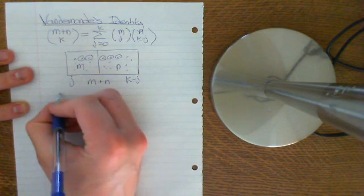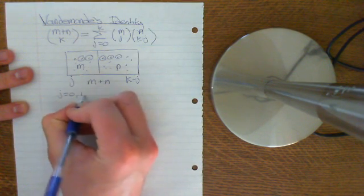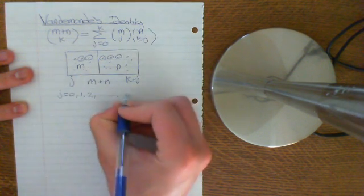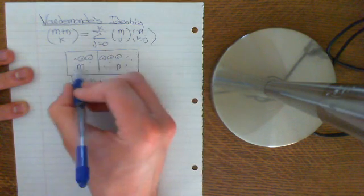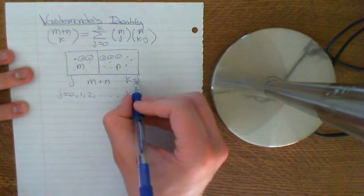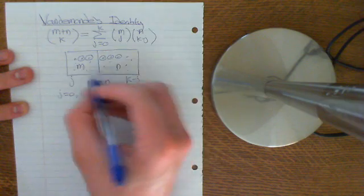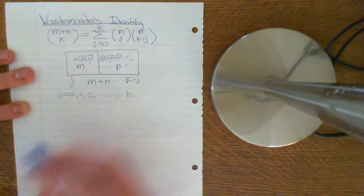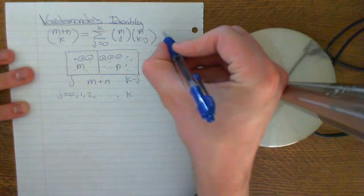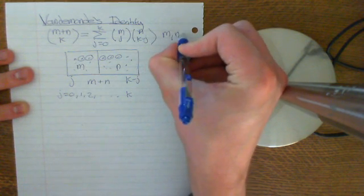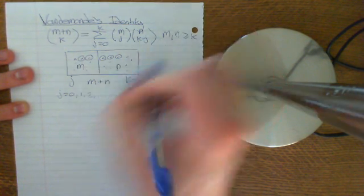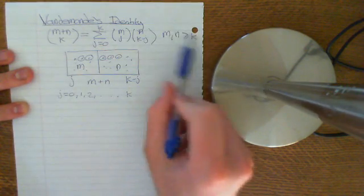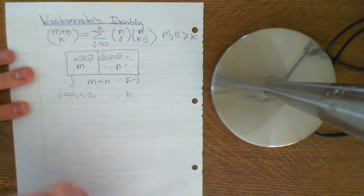And will that j vary? And j can equal anything from 0 all the way up to k. So you could choose all k things from here, or you could choose no things from here. And obviously, the rest will be chosen from the other one. In this formula, of course, we are assuming that m and n are both greater than or equal to k. If that doesn't hold, then this identity is not true.